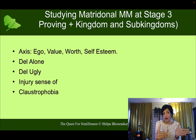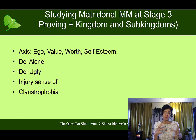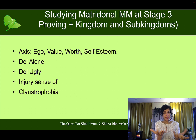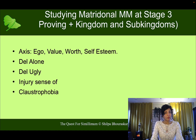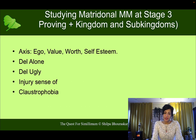How this ego expresses will be unique for each remedy, but this is what you're looking for — if you see these themes coming up in your patient, you're looking at matridonals at Stage 3, just based on the proving information. But you get more information if you study the sub-kingdom and the kingdoms. Let's look at that.